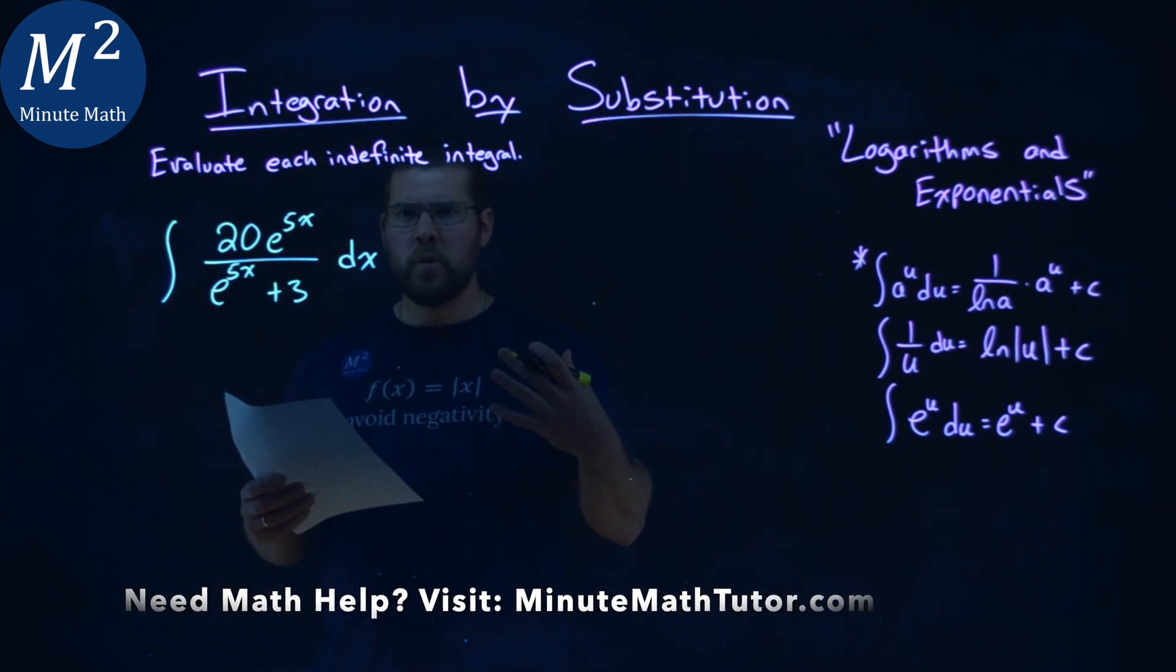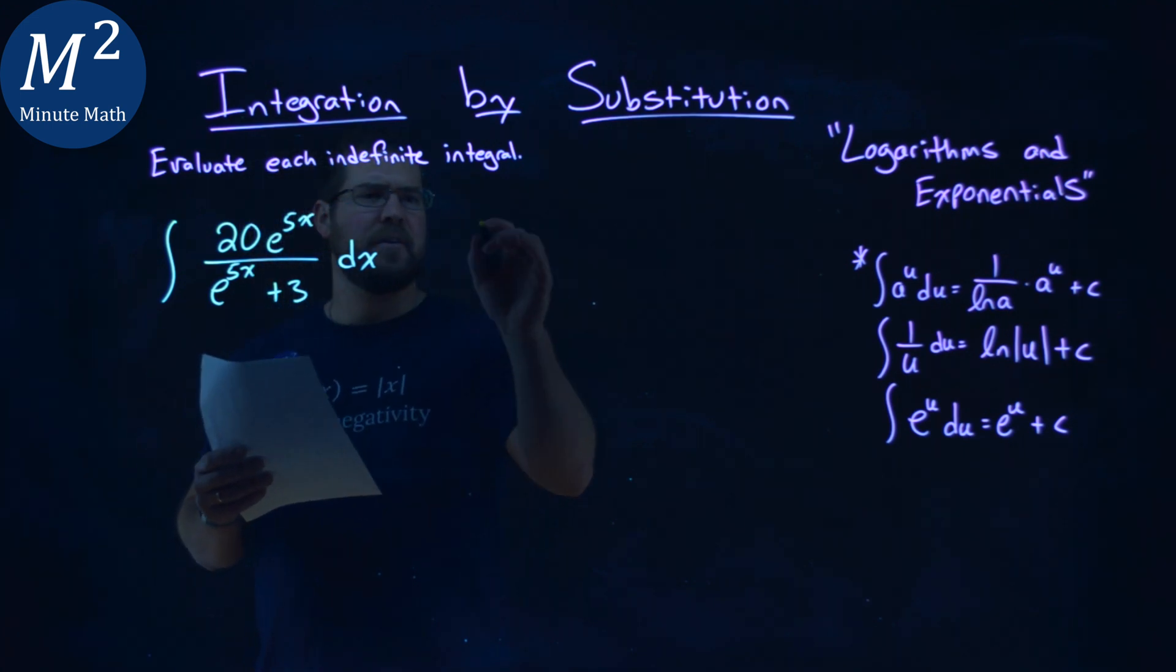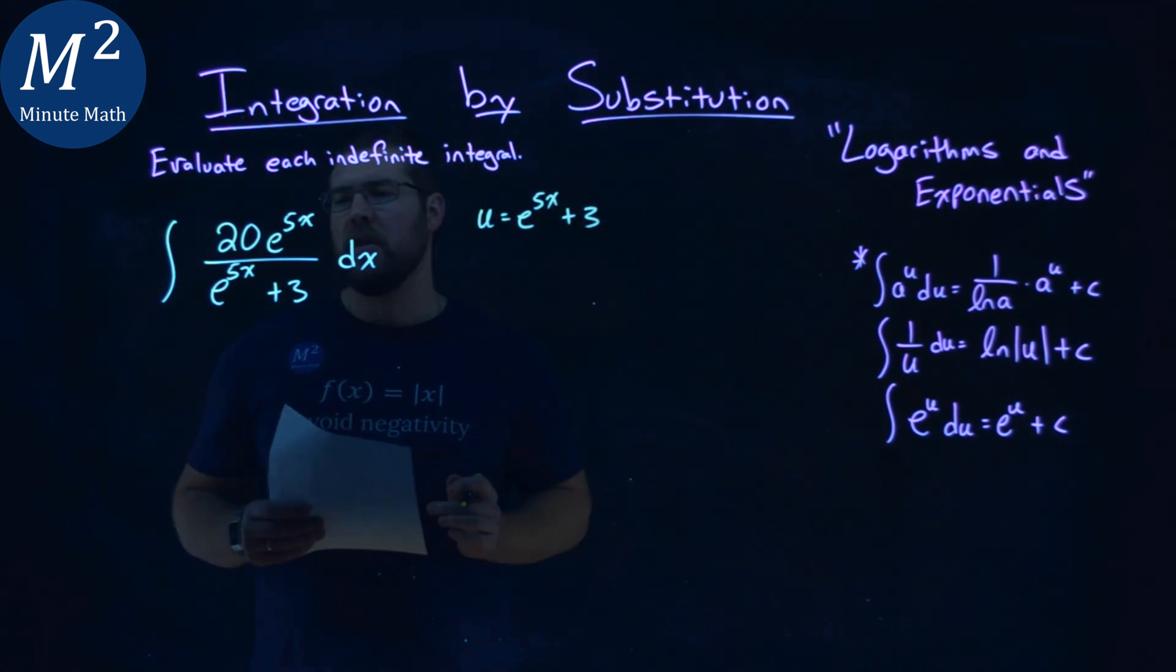Now we first need to find a u value here, and I actually like to deal with my denominator here. I'm going to set my u to be the denominator, e to the 5x power plus 3.